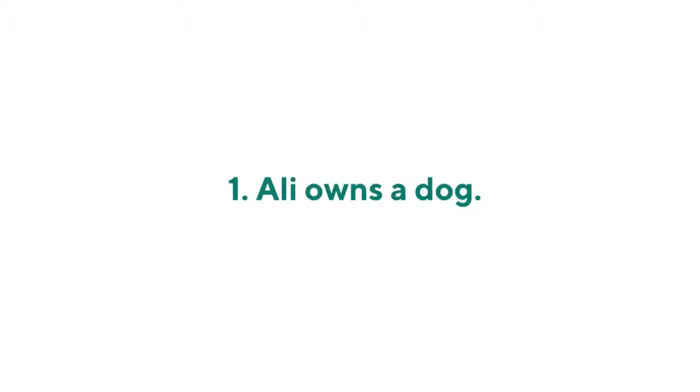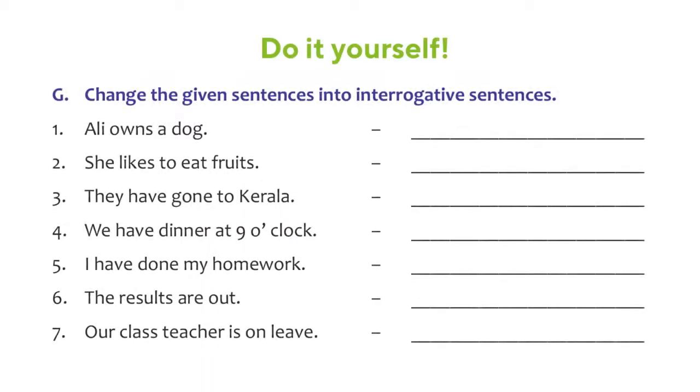On page number 12, you see two more exercises. The first one is to change the given sentences into interrogative sentence. Example, Ali owns a dog. How do you make an interrogative sentence or a question out of this? What does Ali own? So go ahead and look at the rest of the sentences and do it by yourself.